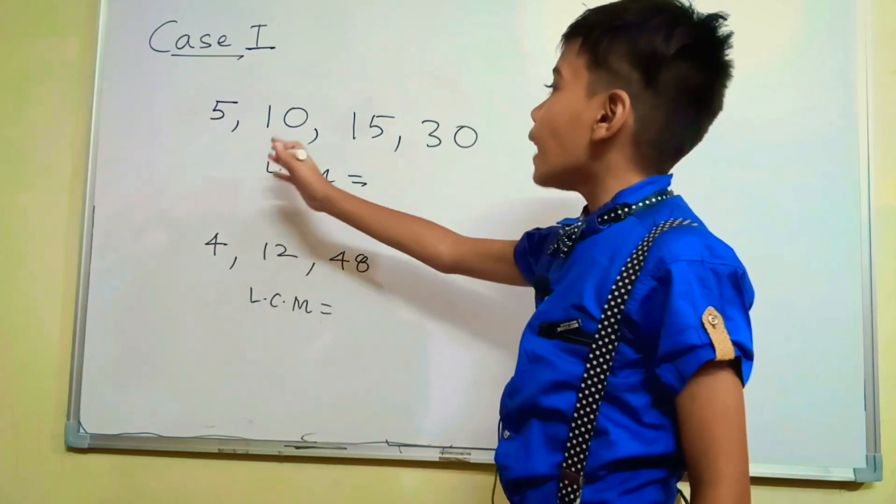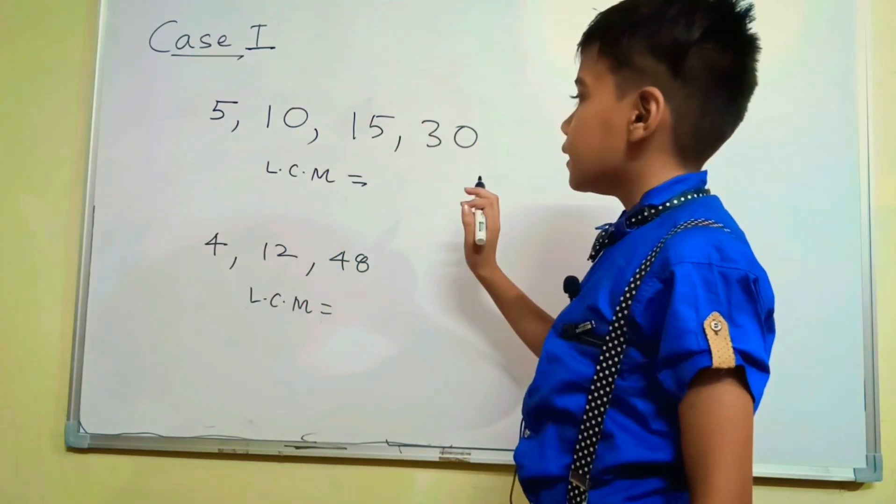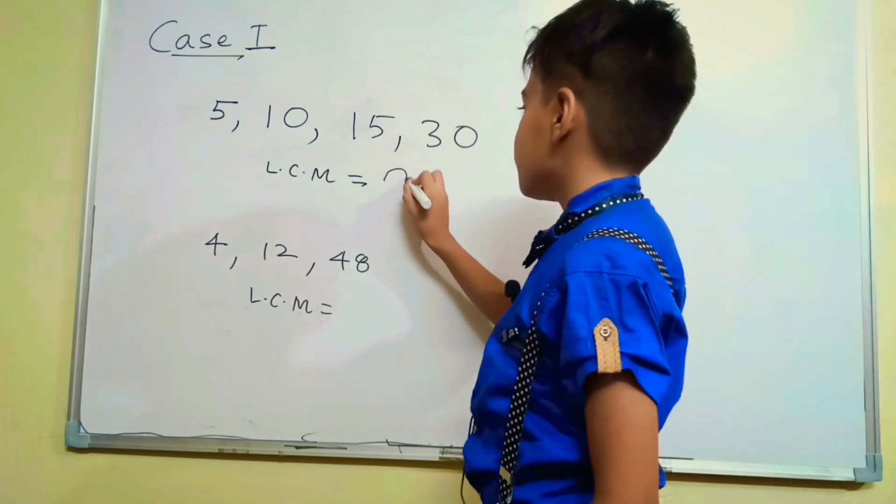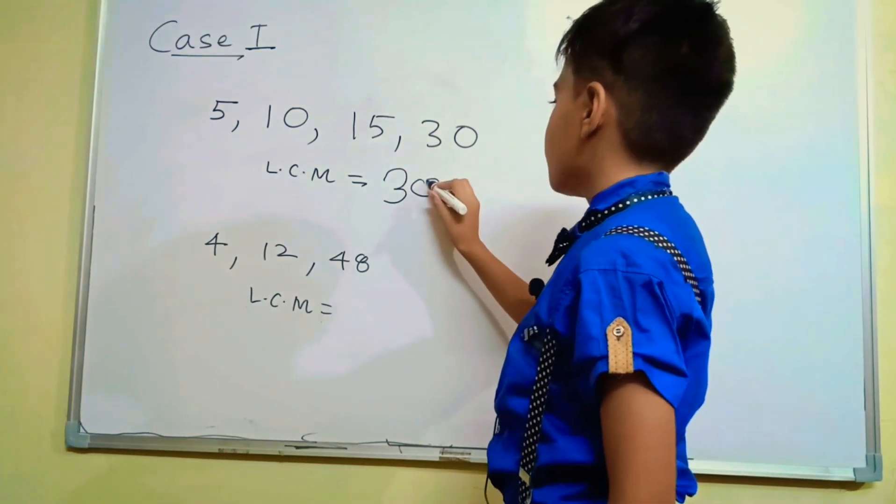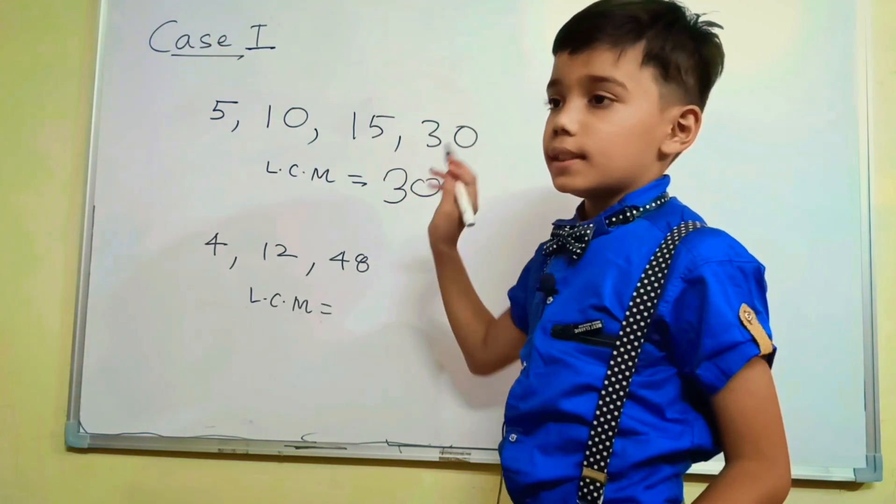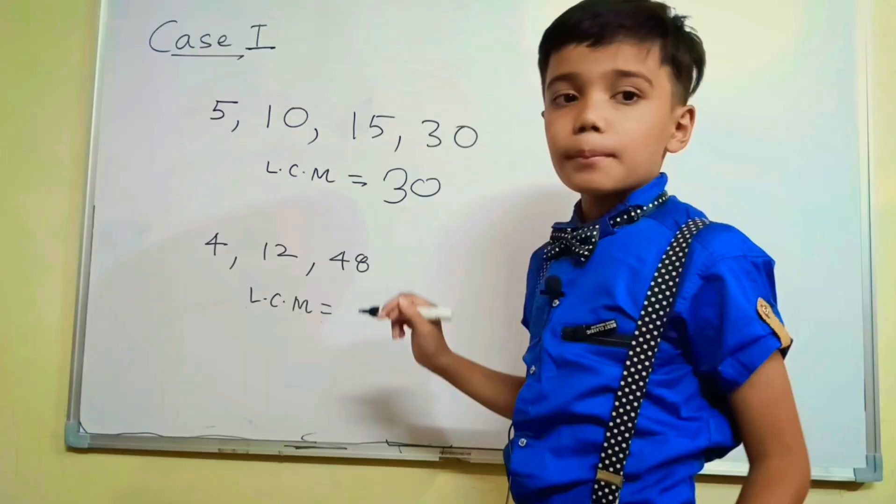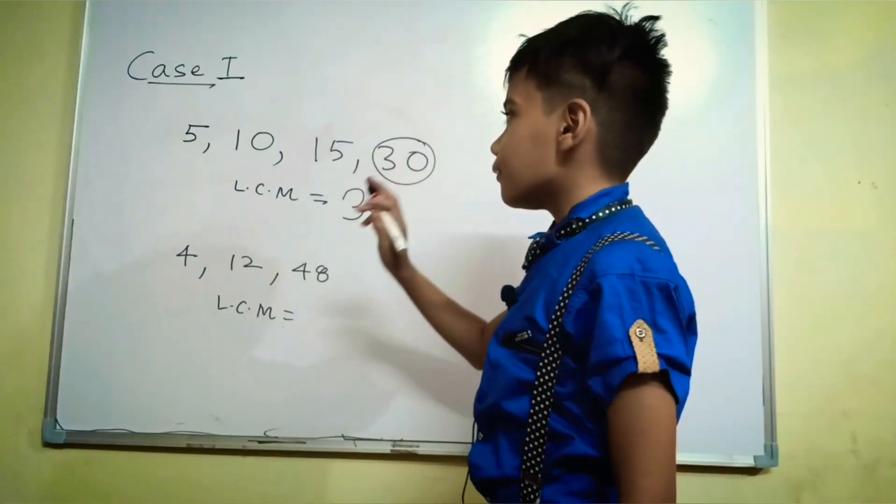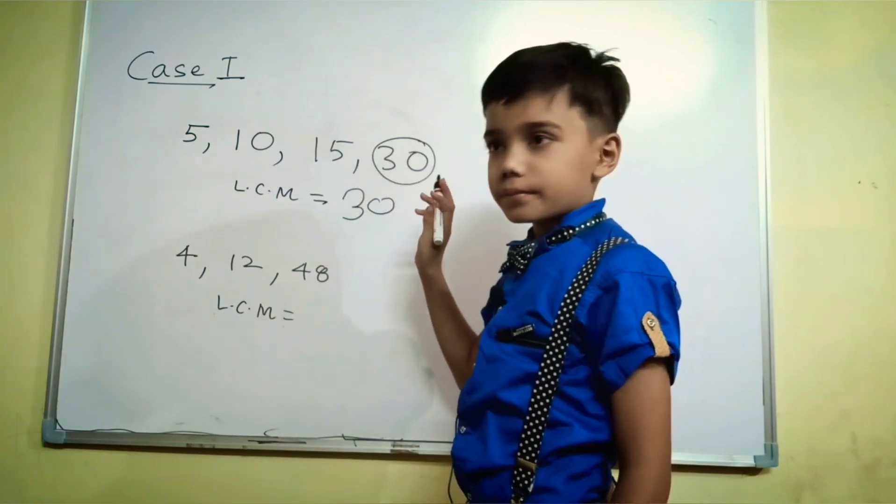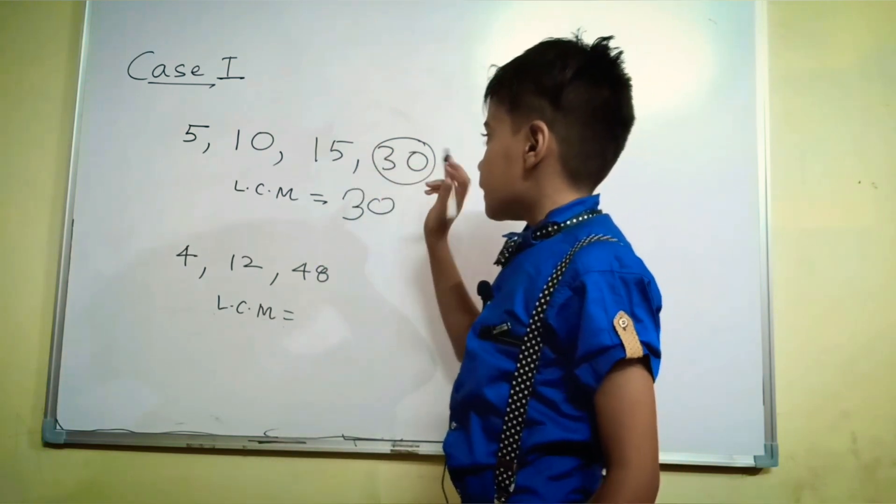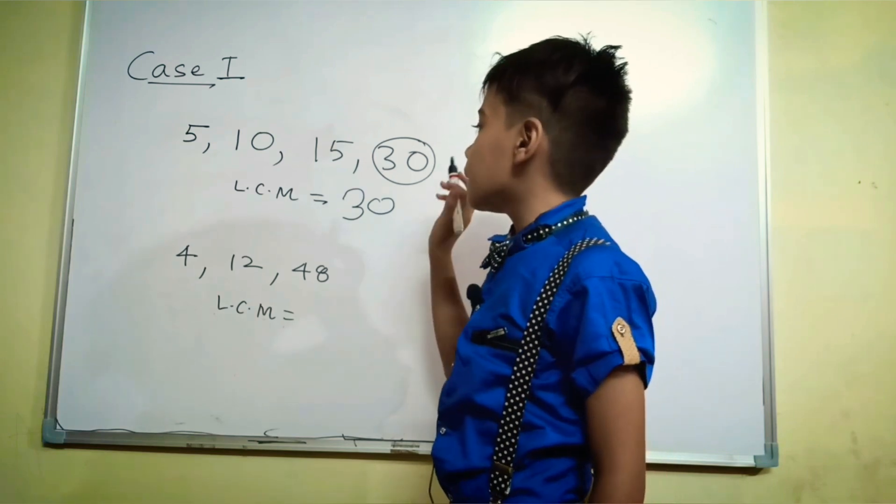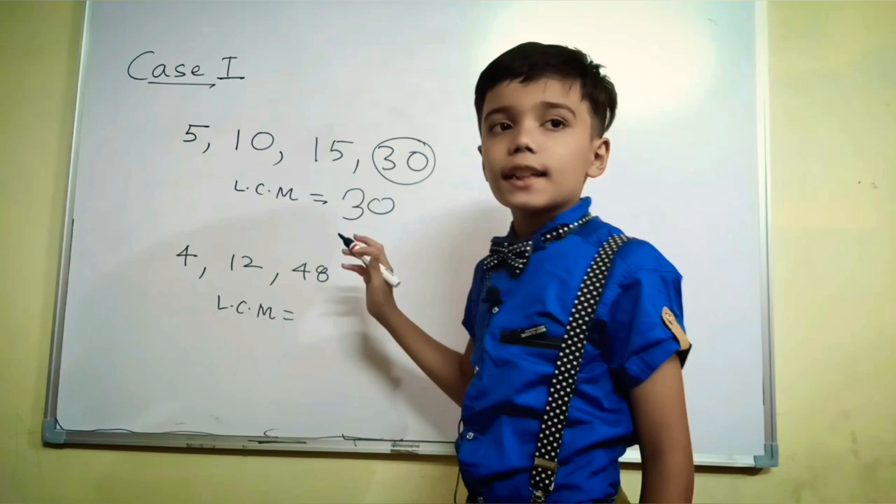Suppose we are having 5, 10, 15 and 30. What will be the LCM? LCM is 30. How? If the bigger number is divisible by the smaller number, then the LCM is the bigger number. I mean 5, 10 and 15 are divisible by 30. 30 is the bigger number, it is divisible by these all numbers. That's why our LCM is 30.